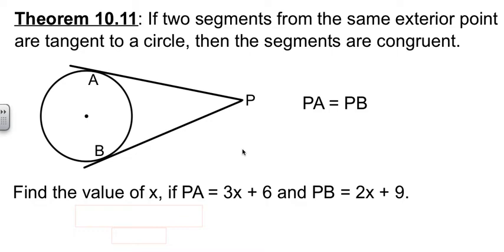Well, since we know these two things are equal to each other by this theorem, if they tell me PA has a value and PB has a value, then I can write an equation that they're equal to each other, subtract the 2x over, subtract the 6 over, and we find out that x equals 3.